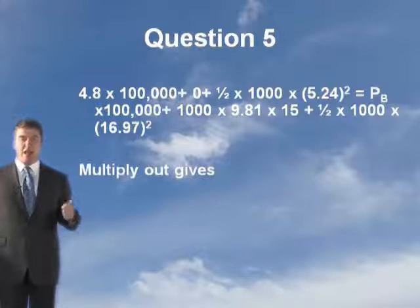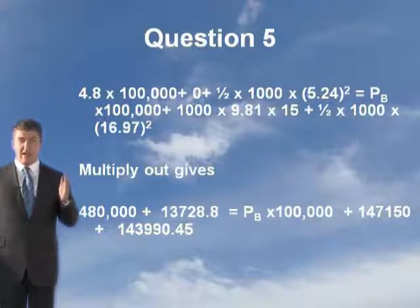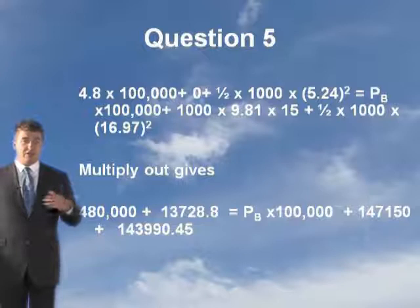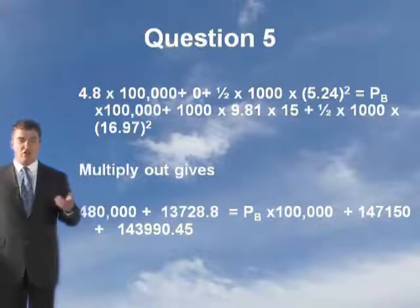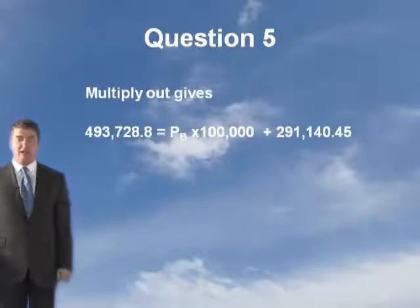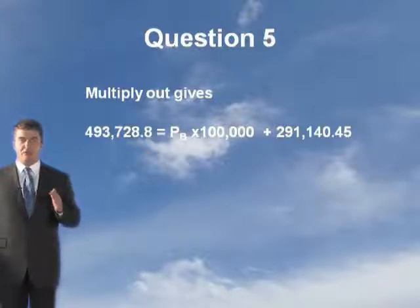Multiplying these out: 480,000 plus 13,728.8 equals PB times 100,000 plus 147,150 plus 143,990.45. Those are all the energies we know — the only unknown is PB. Multiplying everything out gives: 493,728.8 equals PB times 100,000 plus 291,140.45.